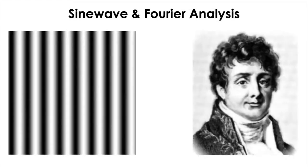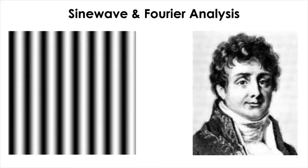The idea is that any periodic pattern can be expressed as a sum of trigonometric functions. About 200 years ago, a French mathematician, Joseph Fourier, maintained that any two-dimensional image, no matter how complex, can be created from or decomposed into a set of sinusoidal patterns.